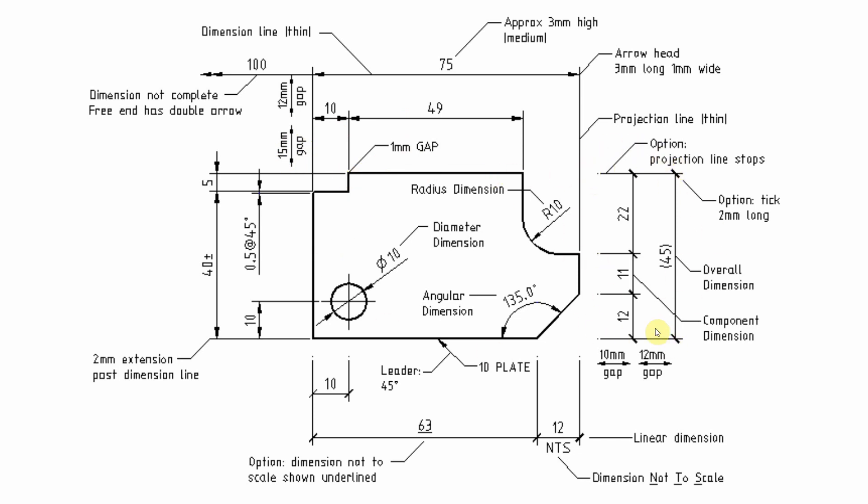Now with the other style, where you have the projection line stopped short, you have a consistent gap there. And that formula is 10 millimetres times the scale. So in this case, at one to one, it's 10.